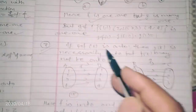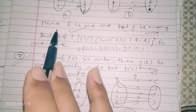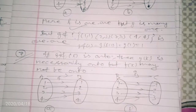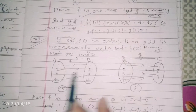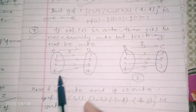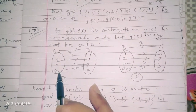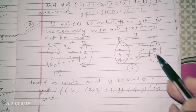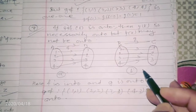The seventh property: if gof is onto, then g is necessarily onto. About f we cannot say it is onto. Let's verify: f is defined from A = {1,2,3,4} to B = {1,2,3,4}, and g from B = {1,2,3,4} to C = {1,2,3}. Here f is into (not onto) because element 4 in B has no pre-image in A. But g is onto since every element of C has a pre-image in B.